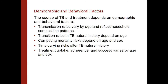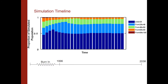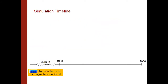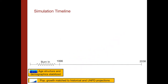We also included demographic and behavioral factors, since these inform how tuberculosis is transmitted. Transmission rates varied by age and reflected household compositions within the simulation. Transition rates depended on natural history and age, and competing mortality risks were also dependent on age and sex. Treatment uptake, adherence, and success varied by age, sex, and time within the simulation. We had the model burn in so that our demographics would stabilize and reflect the age stratifications seen in India. Population growth was also included, matched to both historical data and projections from the United Nations population division.